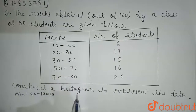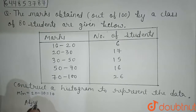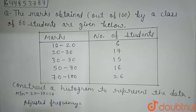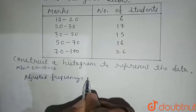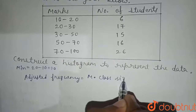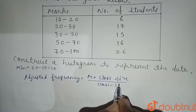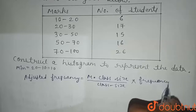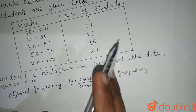We'll use the adjusted frequency formula. The adjusted frequency is equals to: minimum class size divided by the class size, multiplied by the frequency. The minimum class size is 10, so we put 10 in the numerator.